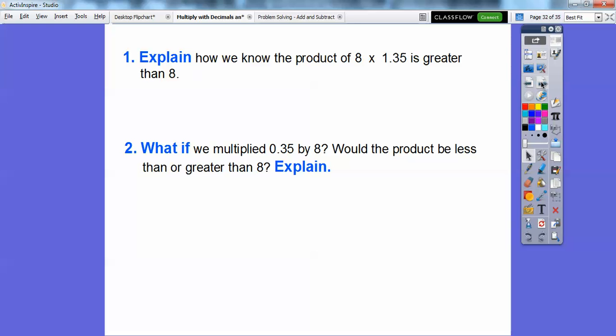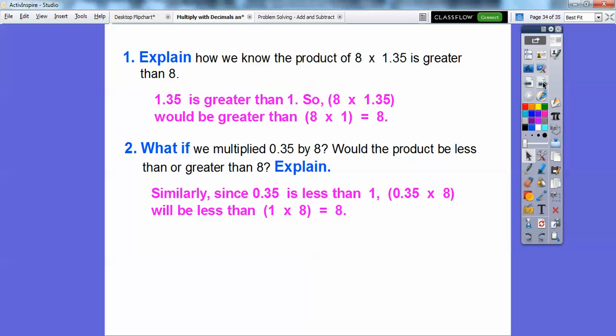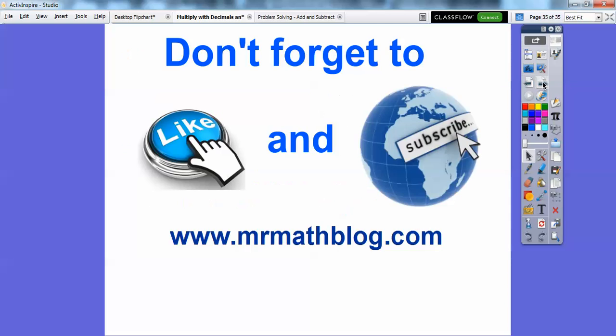Let's answer a couple questions and we'll be done. So explain how we know the product of 8 times 1.35 is greater than 8. Well, we know 8 times 1 is 8. So since 1.35 is greater than 1, then 8 times 1.35 is going to be greater than 8 times 1, which is 8. So this is greater than 1. 8 times 1 is 8. So I know that 8 times this is going to be greater than 8 right there. What if we multiplied 0.35 times 8? Would the product be less than or greater than? Well, I know 8 times 1 is 8 again, you guys, and since 0.35 is less than 1, then 0.35 times 8 will be less than 1 times 8, which is equal to 8. So it's going to be less than that.